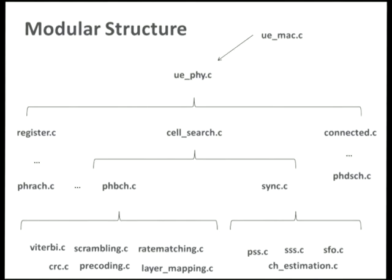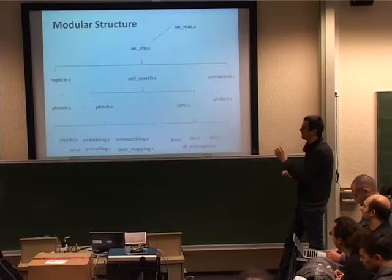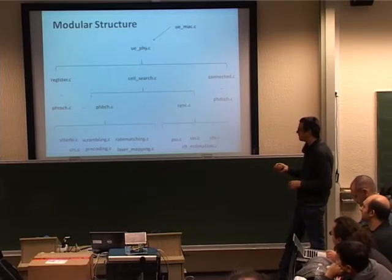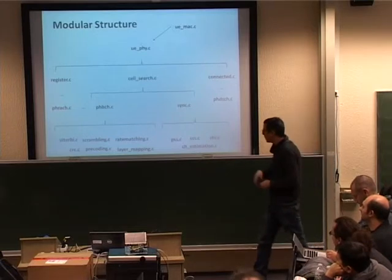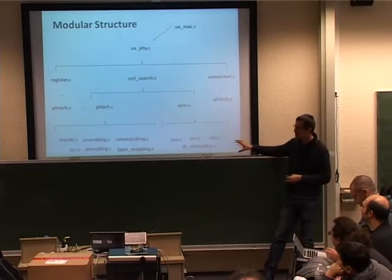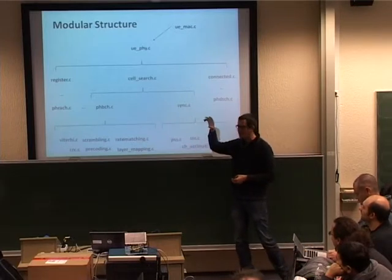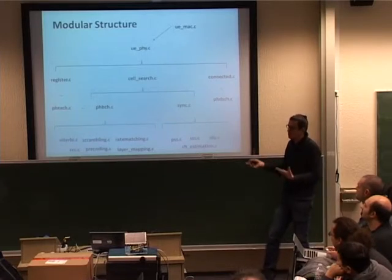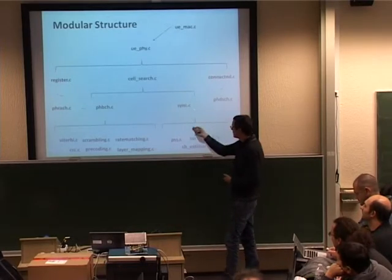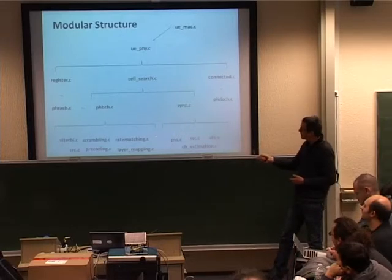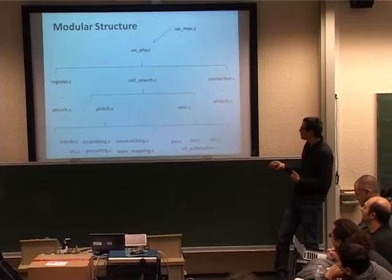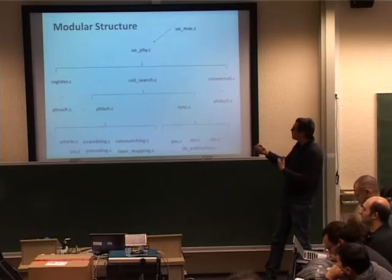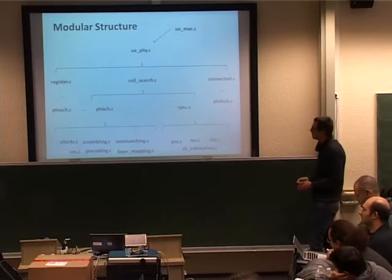This diagram shows the modular structure of the library. At the bottom, you have small modules, each implementing a DSP block — for instance, the Viterbi, the Scrambling, the Rate Matching, or the CRC. These modules have minimal inter-module dependencies. So if you are only interested in the precoding of LTE, you can take that file and move it to your application. As you move up through the layers, you start finding more dependencies. For instance, the synchronization algorithm uses a set of files for decoding the primary synchronization signal to estimate the channel.